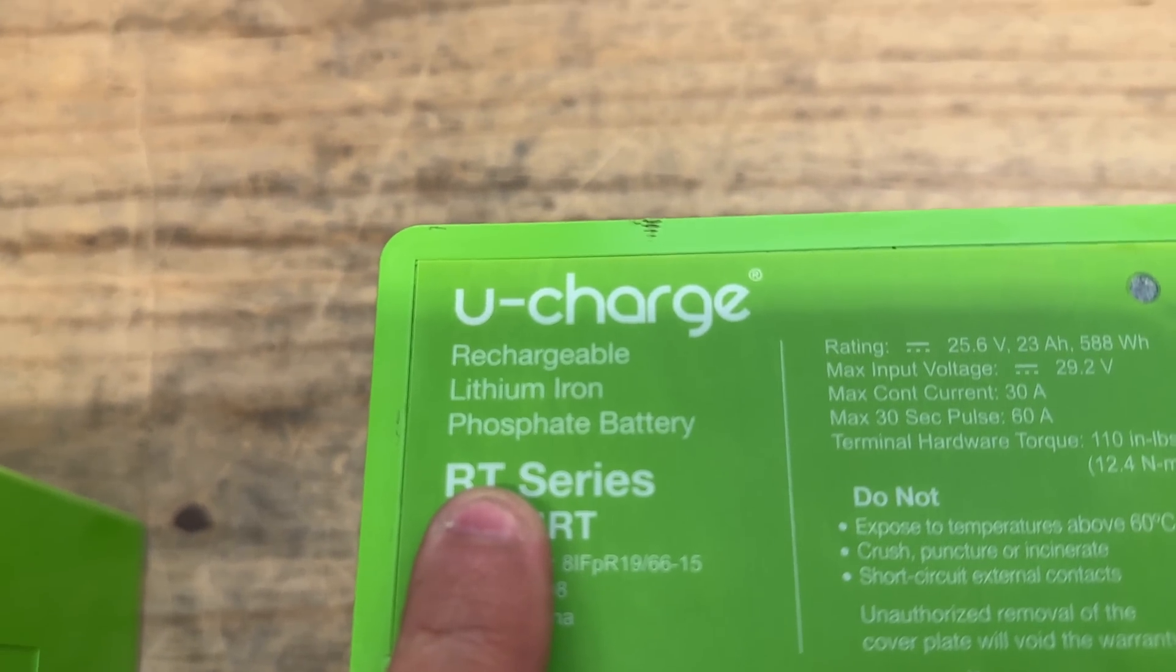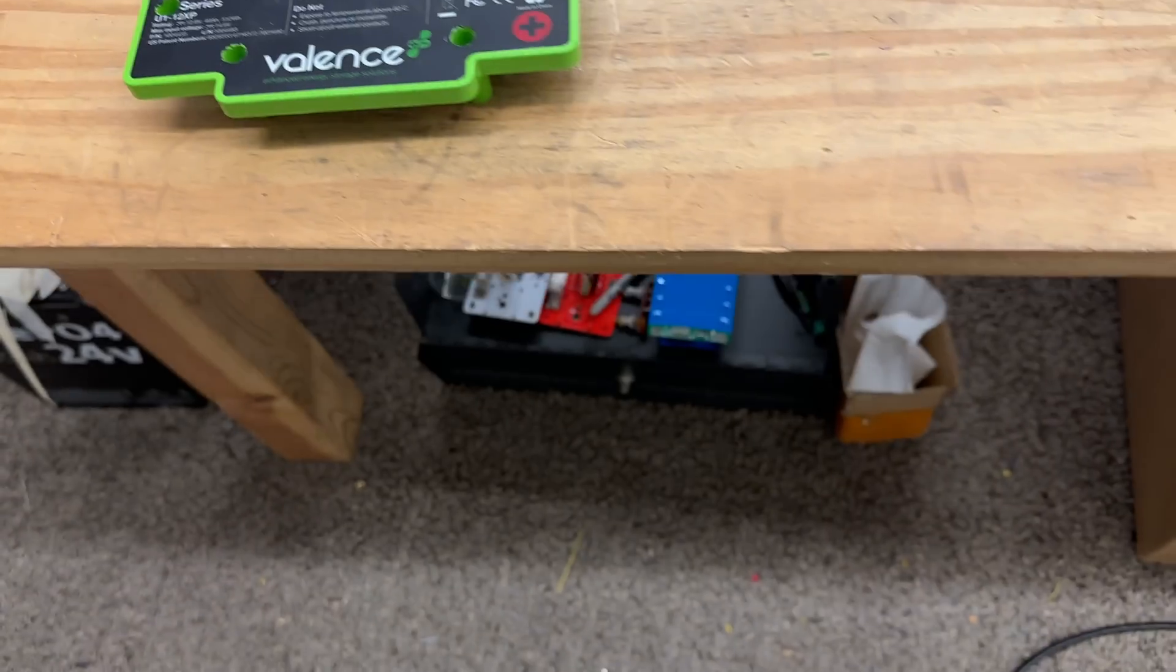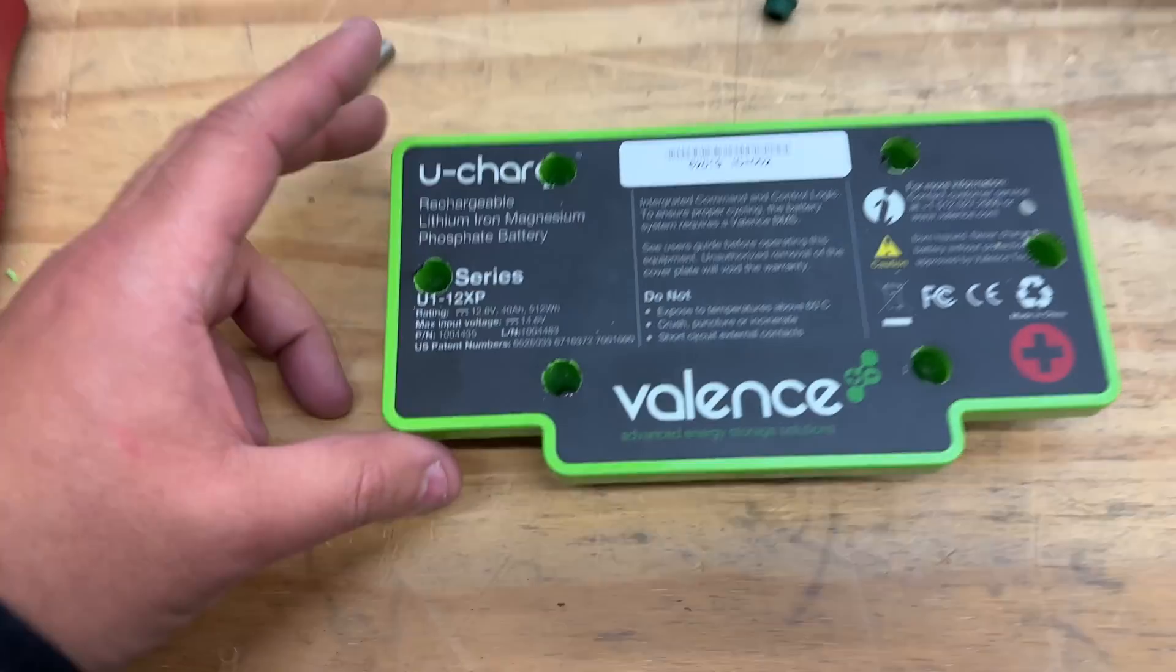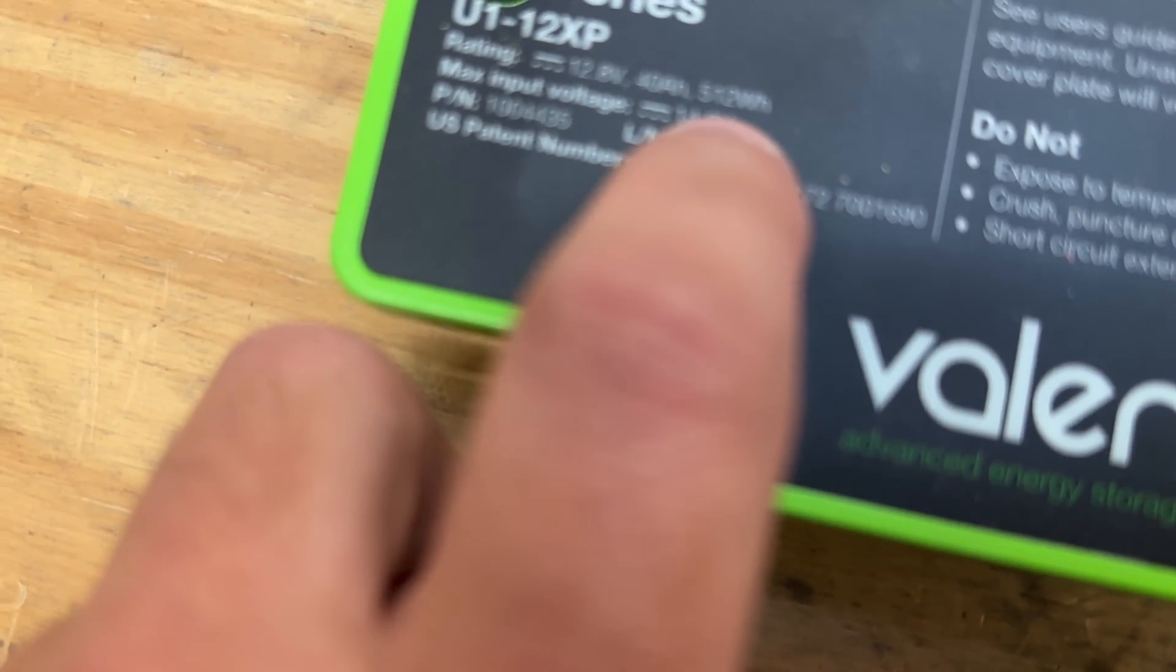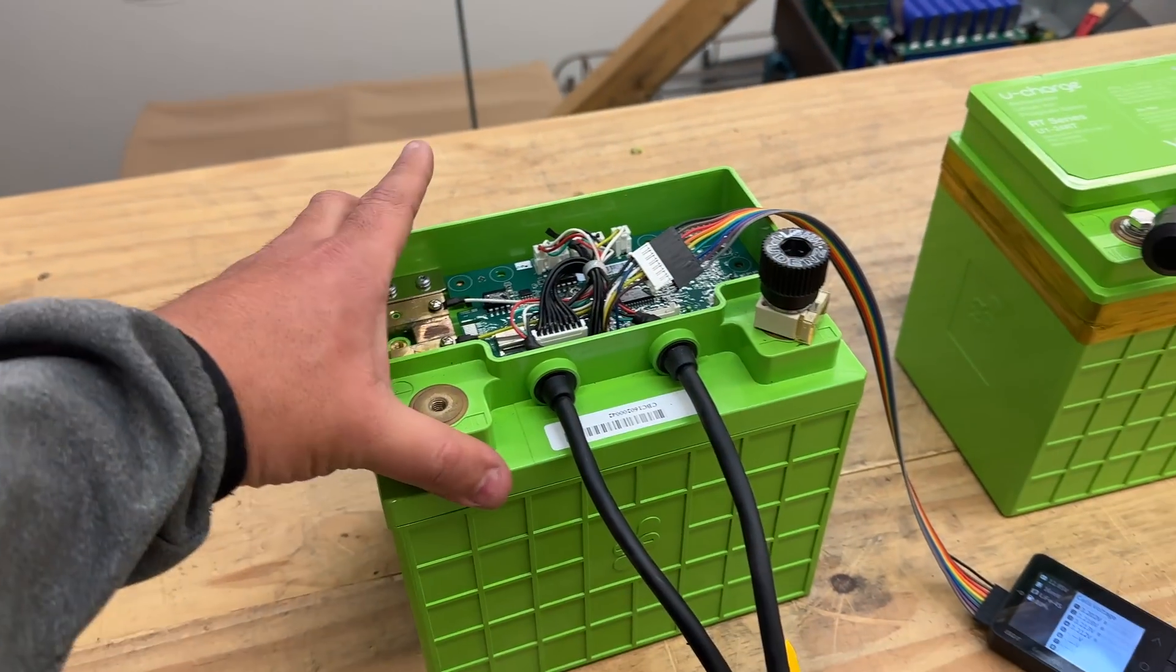These are apparently rechargeable lithium iron phosphate batteries, at least this one is. The thing about these is that they're not very big - they're 40 amp hours, so about half a kilowatt. They're small, like these tiny little things.